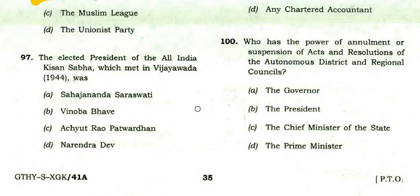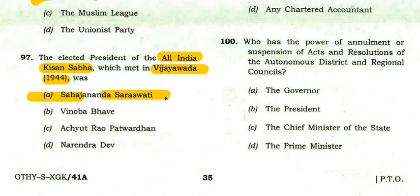The elected president of the All India Kisan Sabha which met in Vijayawada in 1944 was Sajanand Saraswati.